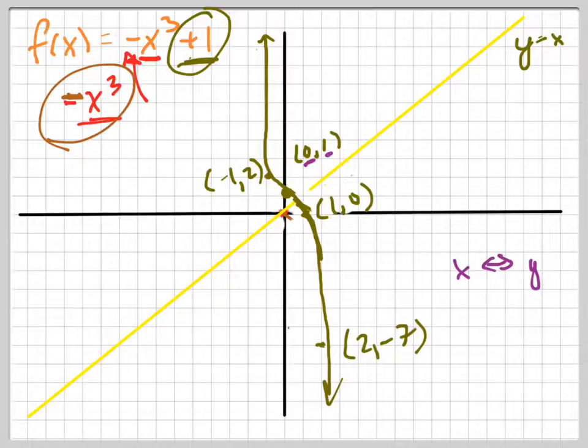So when we want to graph the inverse, what we're going to do in purple is we're going to flip these. So, 0, 1 becomes 1, 0. So, 1, 0 is on that purple graph. 1, 0 becomes 0, 1. It's on that graph.